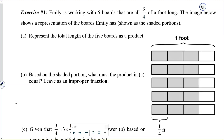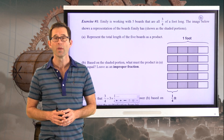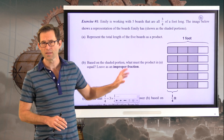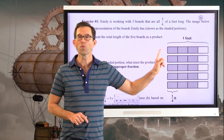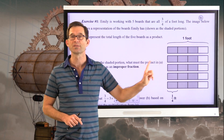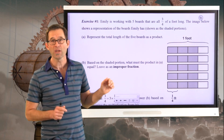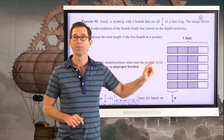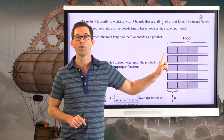Exercise number one. Emily is working with five boards that are all three-fourths of a foot long. The image below shows a representation of the boards Emily has, shown as the shaded portions. Each one of these things represents a one-foot long board, but she's got five of them that are just three-fourths of a foot long.